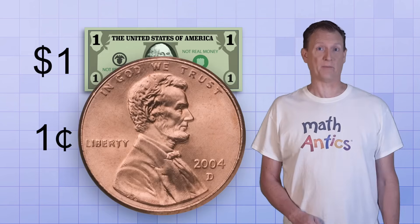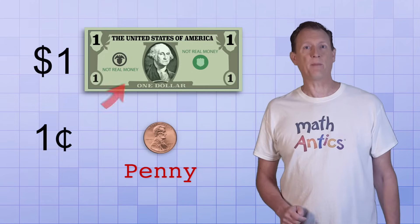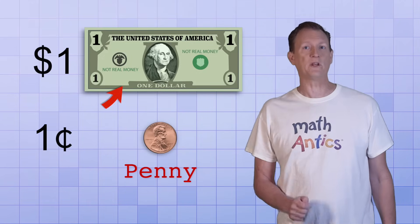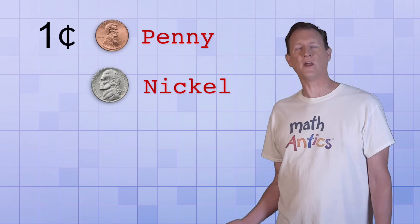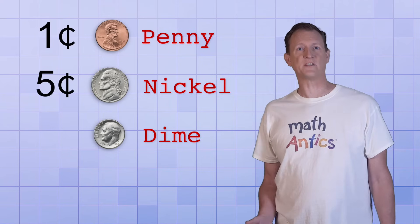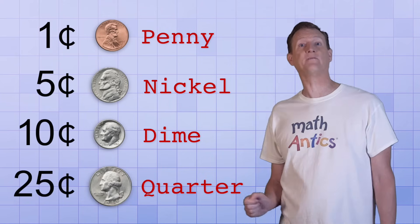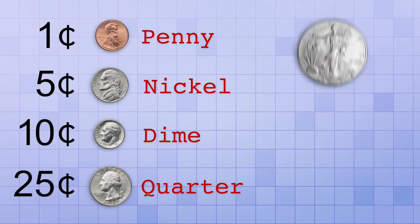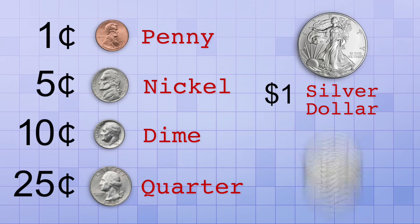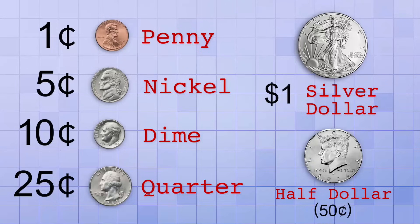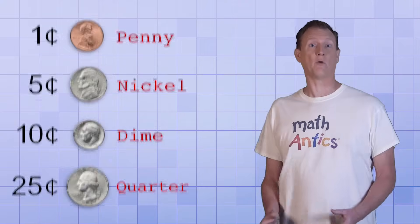Instead of using paper currency to represent the value of one cent, the US government uses a metal coin called a penny. That's a portrait of Abraham Lincoln there on the penny. And just like with paper money, the US government only makes a few different metal coins. They make a penny that represents one cent, a nickel that represents five cents, a dime that represents ten cents, and a quarter that represents twenty-five cents. They also make a coin worth one dollar, often called a silver dollar, and one worth half a dollar, but those are mainly traded by coin collectors. We're just going to focus on the four that are commonly used.